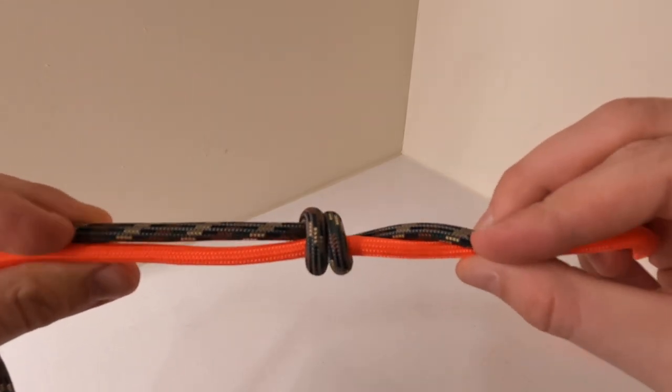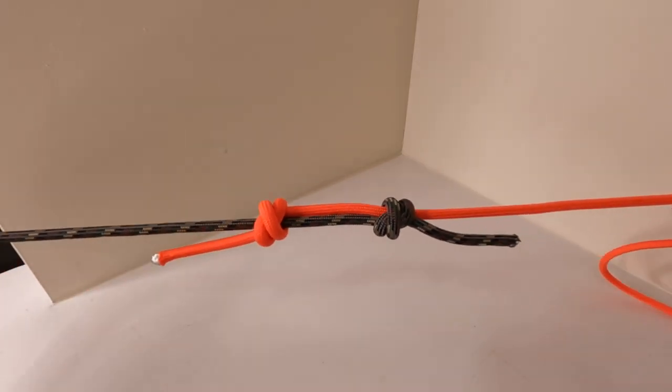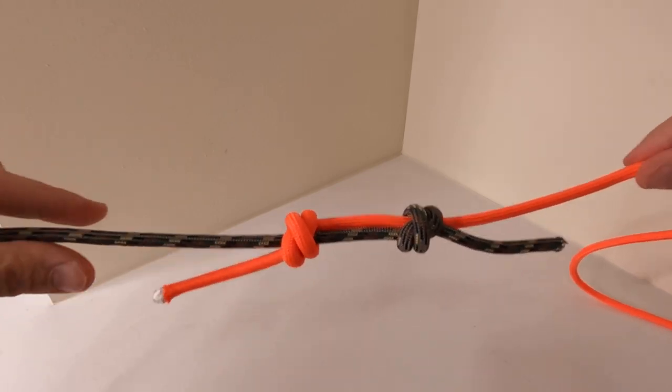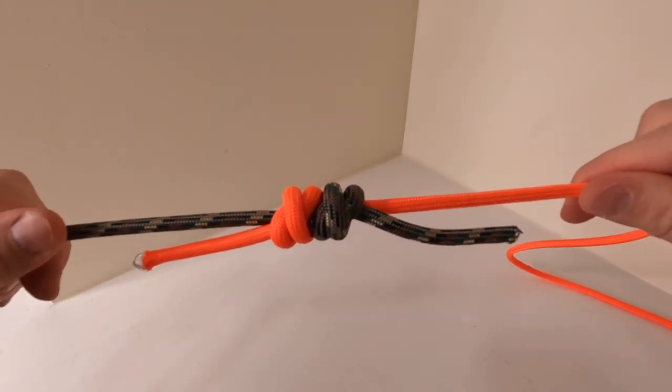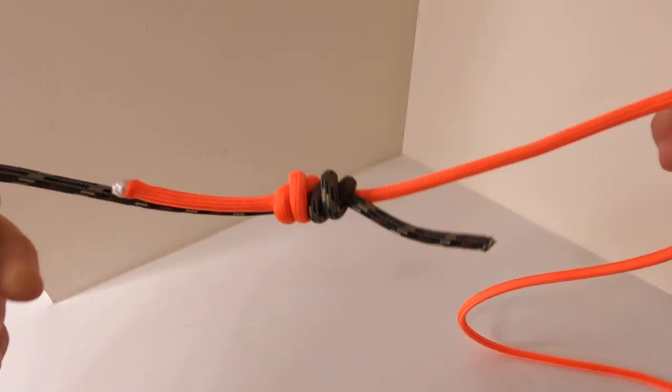And now you're simply going to pull both standing parts of each rope tight until those two knots come together. And now you have a completed double fisherman knot. These also work great for grab handles too.